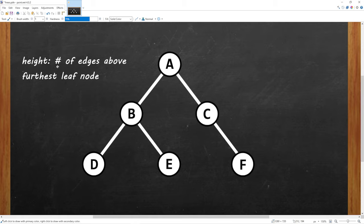And lastly, the height of a node is the number of edges above the furthest leaf node. All of these leaf nodes are the same distance away from the root node. These would all have a height of zero. B and C have a height of one. And A has a height of two.